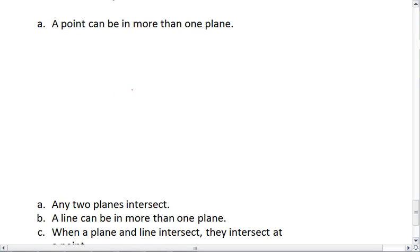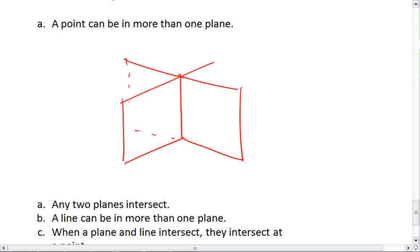If we have two planes that intersect, remember, their intersection is a line, and that line contains at least two points. So A and B both lie in planes M and N. So this statement is true.